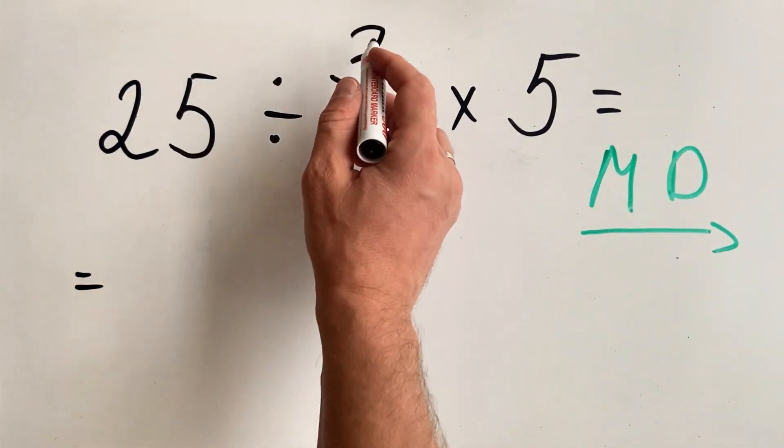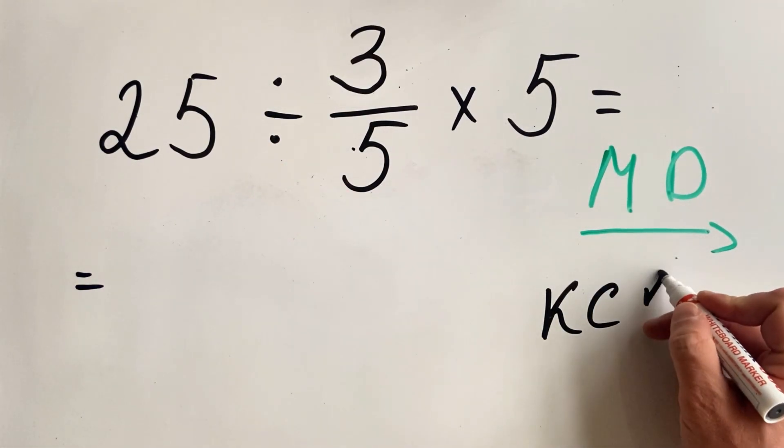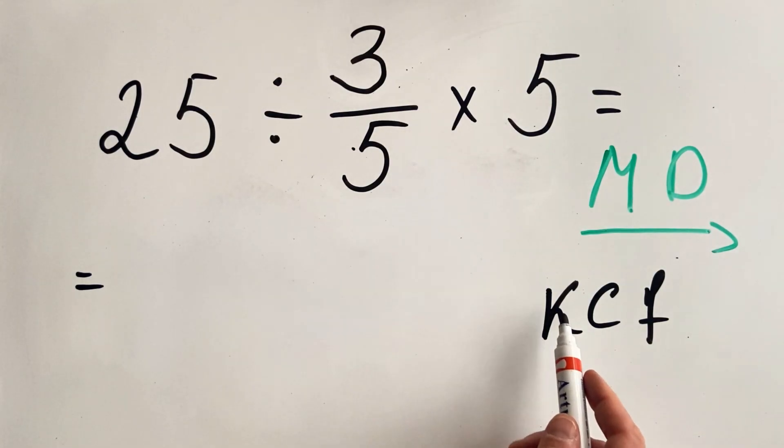We have 25 divided by 3 over 5. To do this, the easiest way is to remember the KCF rule, which means keep the first.